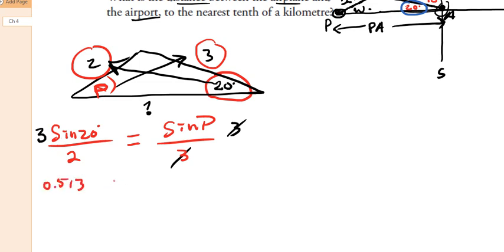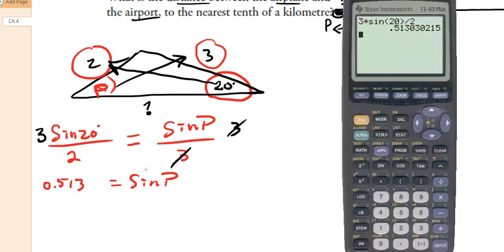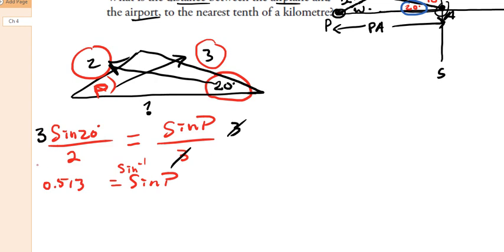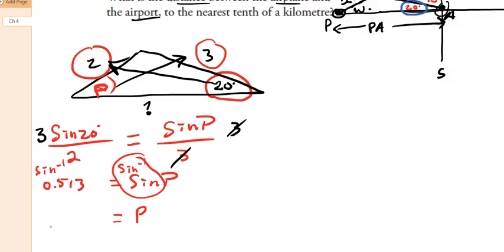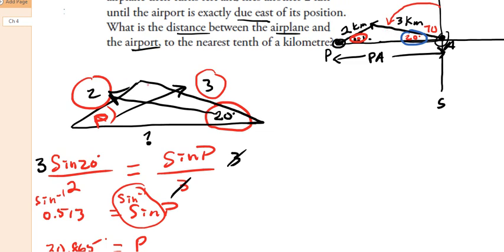So 0.513 equals sine of P. To get the angle, we need to apply the inverse sine — second function sine — which undoes the sine and gives us P by itself. Use as many decimal places as possible during the calculation and only round at the very end. We get P equals approximately 30.866 degrees.